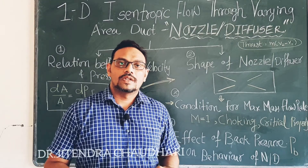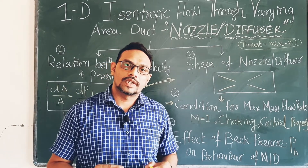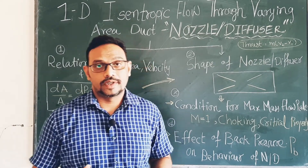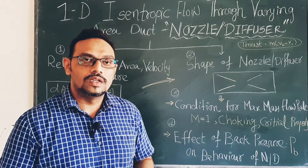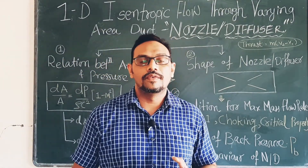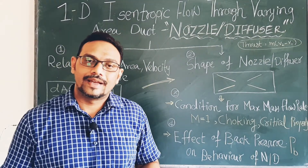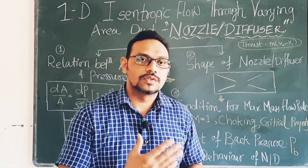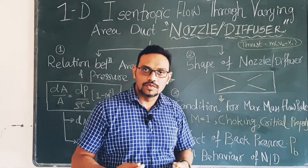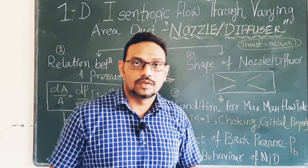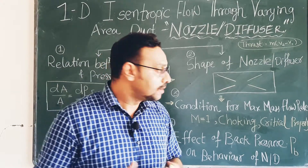The title of this lecture is one-dimensional isentropic flow through a varying cross-section area duct. A varying cross-section area duct is basically a nozzle or diffuser. In this topic we will try to understand the behavior of nozzles and diffusers — what happens when compressible fluids like air, steam, or gas flow through a nozzle or duct, and what happens to the fluid properties.